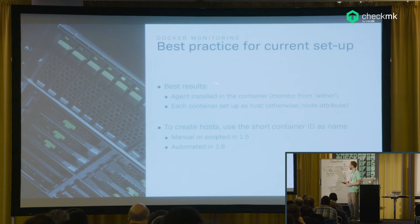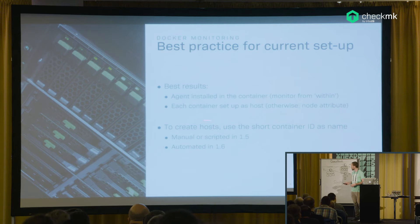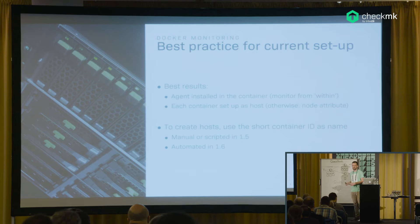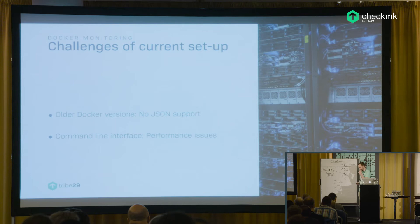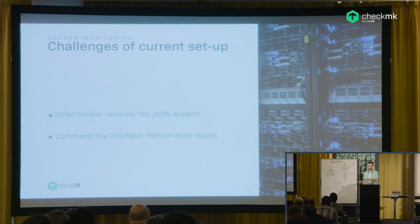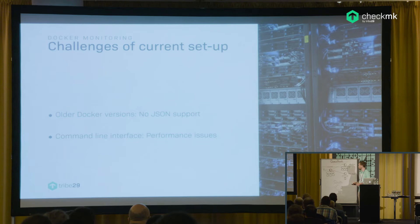From our current setups with these two Docker plugins, we have a couple of best practices true for version 1.5. The best results are achieved if the CheckMK agent is installed in the container itself, getting the data directly from the container. You also have to set up the container as a host. In 1.5, this has to be scripted manually; with 1.6, it will be done automatically via the piggyback mechanism. One challenge is that older Docker versions don't give JSON output — that's a compatibility problem we can't ignore.